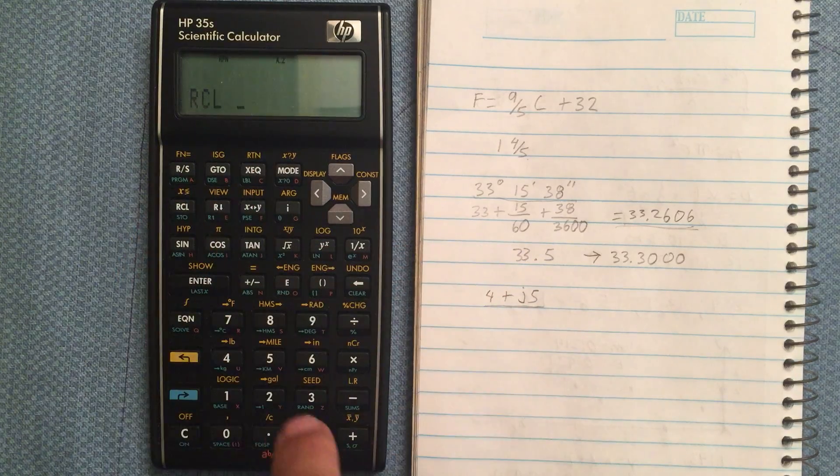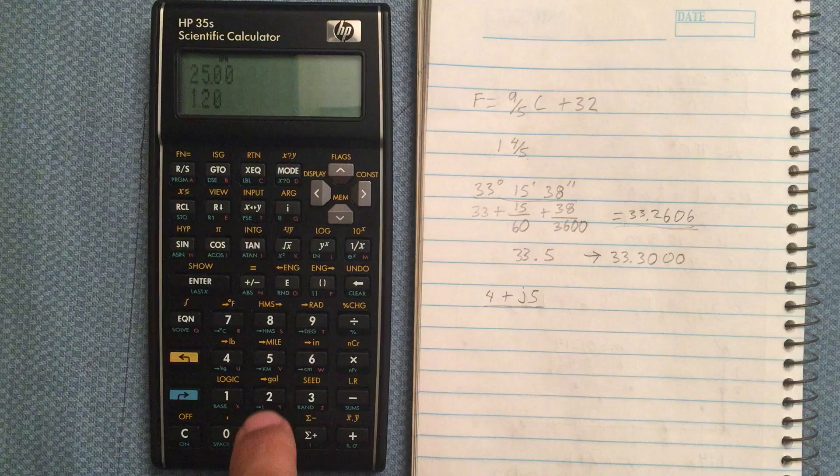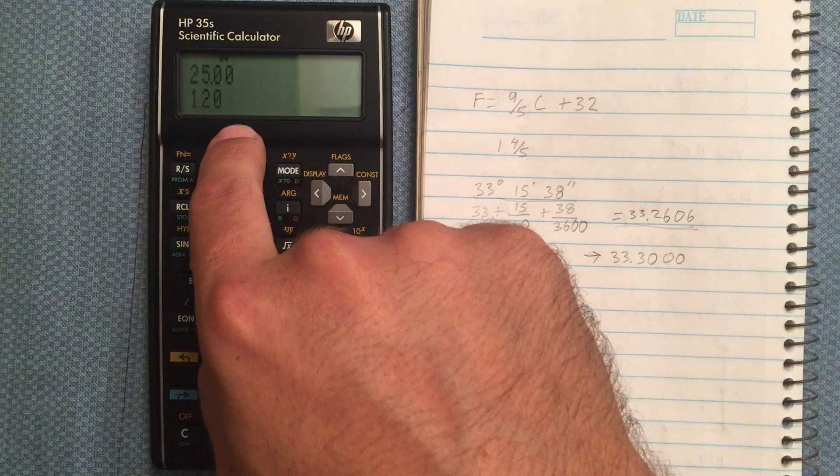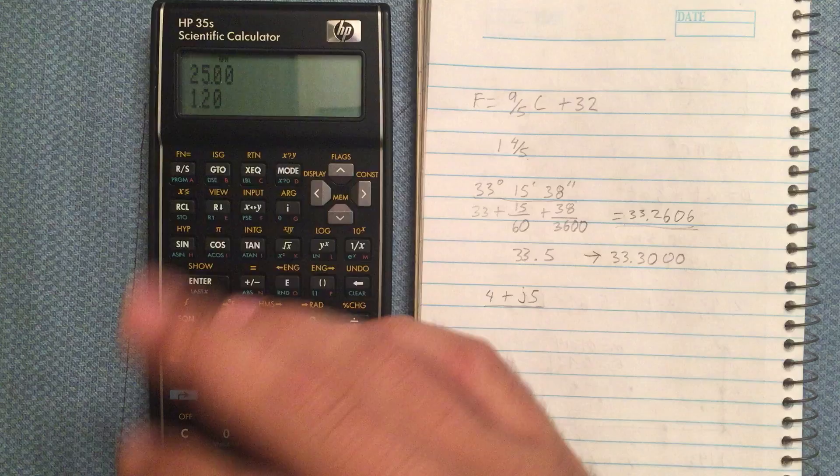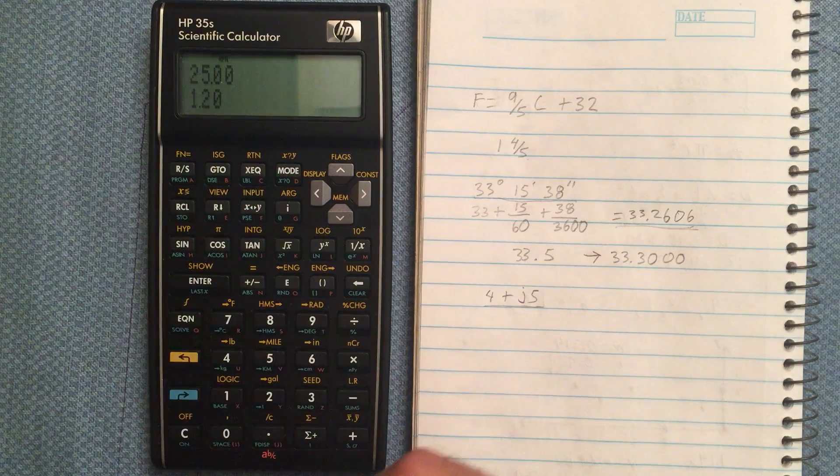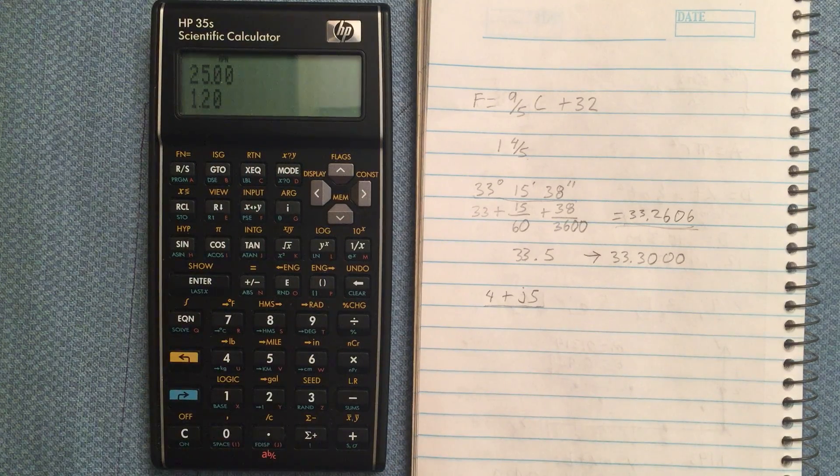Now if I go and recall y, remember it used to be 25, but now it is 1.2. That's just storing, recalling variables, and being able to swap in and out of a variable.